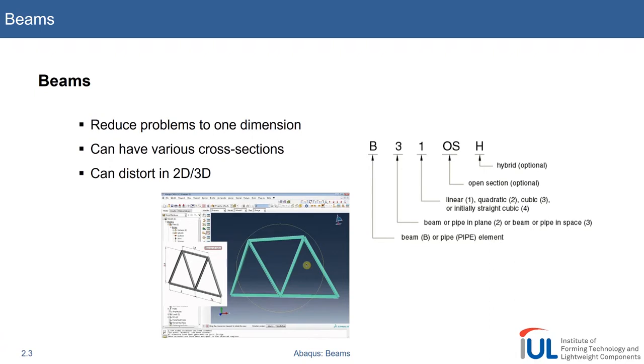Talking about beams one has to understand that it's basically a reduction of whatever problem you want to model to one dimension. Beams only know about their main axis from a mathematical perspective. However, this behavior in this main axis can be defined by various cross-sections which have a huge influence on the overall behavior of the beam. The use of beams is not restricted to one dimension - you can use beams in 2D and even 3D so they can move out of their main axis in the other dimensions.